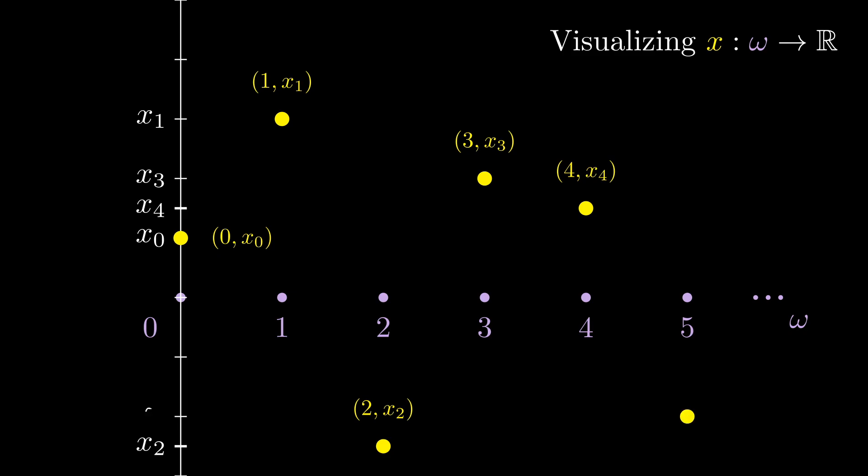If you look closely at that, you notice that the outputs x0, x1, x2, etc. form a sequence of real numbers. This function perspective is typically how sequences are defined in a real analysis class. So R omega is the set of all sequences of real numbers.